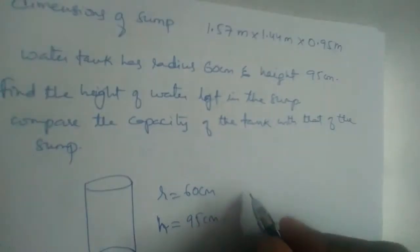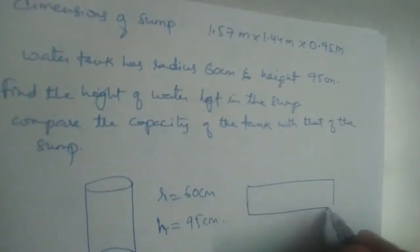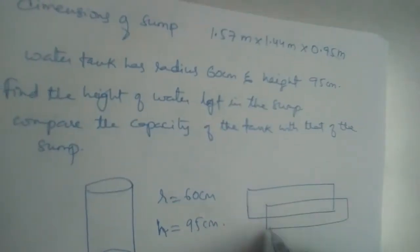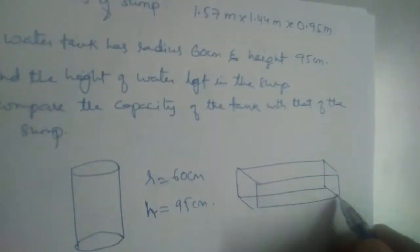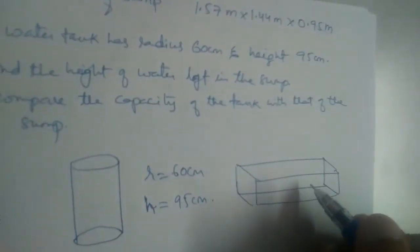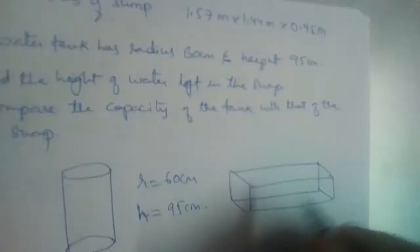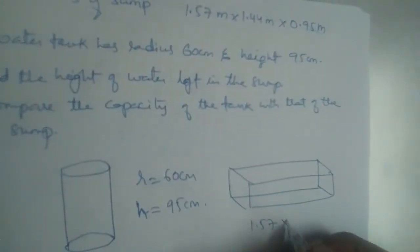And the water sump is in the form of a cuboid. This is the cuboid, the water sump. And what are the dimensions? L, B, H are given: 1.57 x 1.44 x 0.95.